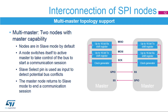SPI networks can operate in a multi-master environment. This mode is used to connect two master nodes exclusively. When neither node is active, they are by default in slave mode. When one node wants to take control of the bus, it switches itself into master mode and asserts the slave select signal on the other node through a GPIO pin. Both slave select, or SS pins, work as hardware inputs to detect potential bus collisions between nodes, as only one can master the SPI bus at a single time. After the session is completed, the active master node releases the slave select signal and returns back to passive slave mode, waiting for the next session to start.